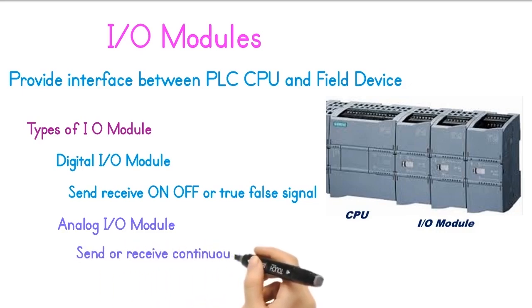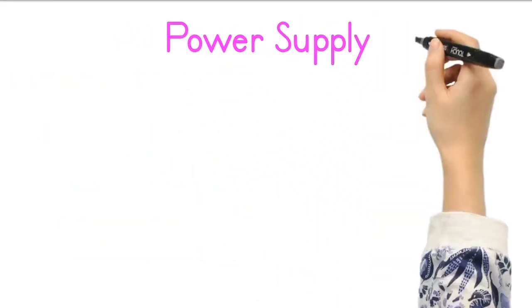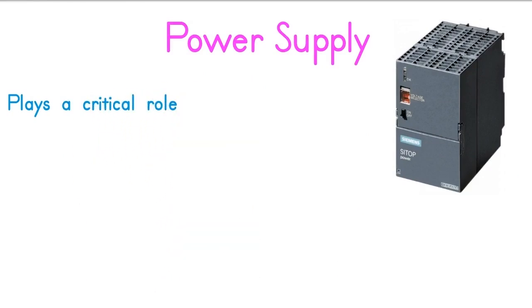While Analog I/O send or receive continuous signals that vary within a range, such as temperature or pressure readings. Power Supply: The power supply in a PLC system plays a critical role in ensuring the reliable operation of the entire system.